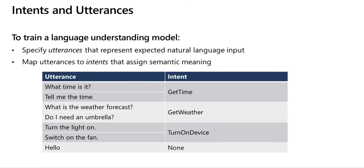In a language understanding model, you must define the intents that you want your model to understand. Spend some time considering the domain your model must support and the kinds of actions or information that users might request. In addition to the intents that you define, every model includes a 'none' intent, which you should use to explicitly identify utterances a user might submit for which there is no specific action required, such as 'hello', 'goodbye', or utterances that fall outside the scope of the model's domain.